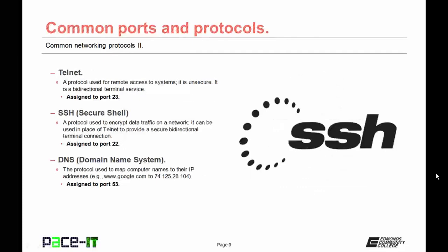Then we have Telnet, which is a protocol that is used for remote access to systems. It is unsecure, but it is also a bi-directional terminal service that comes in handy on occasion. By default, Telnet uses port 23.